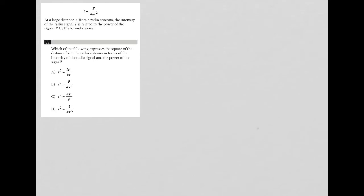So this question provides us with an equation. I always like to rewrite that down whenever it's provided. So I equals P over 4 pi r squared. The information provided says at a large distance r from a radio antenna, the intensity of the radio signal I is related to the power of the signal P by the formula above.